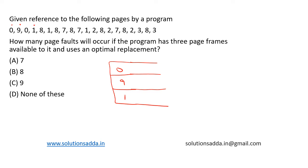When we call eight, it is a page fault, but we will replace that page from the page frame that is least used in the future. We have zero, nine, and one. As we traverse forward, one is recently used, but nine and zero are not recently used anywhere. So we replace zero — zero is replaced with eight.